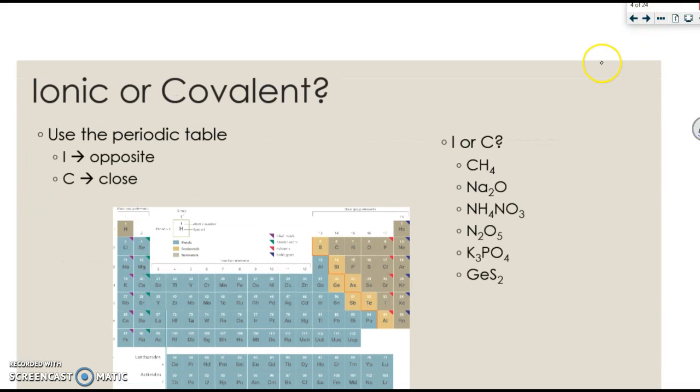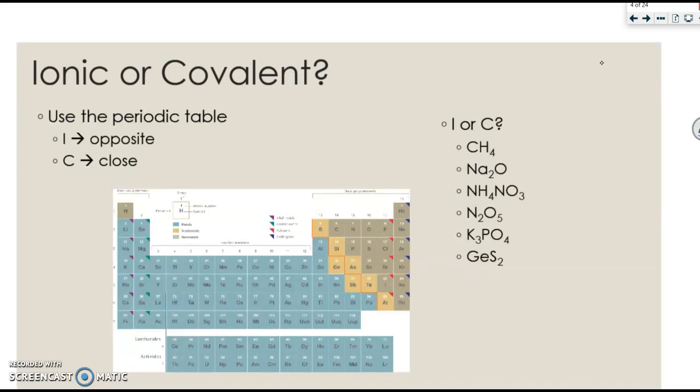One of the things you're going to be expected to be able to do is to determine if something is ionic or covalent. We can do this by using the periodic table. Ionics are opposites. That's how I like to remember it. Covalents are close together. So an ionic has a metal and a nonmetal, usually opposite sides of the table. And covalents are only found in a certain section because they're only nonmetals.